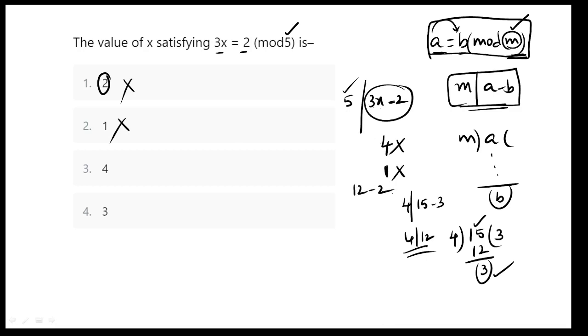3 times 4 is 12, 12 minus 2 is 10. So 10 is divisible by 5, 10 anedhi 5 to pothundi. Answer is 4.